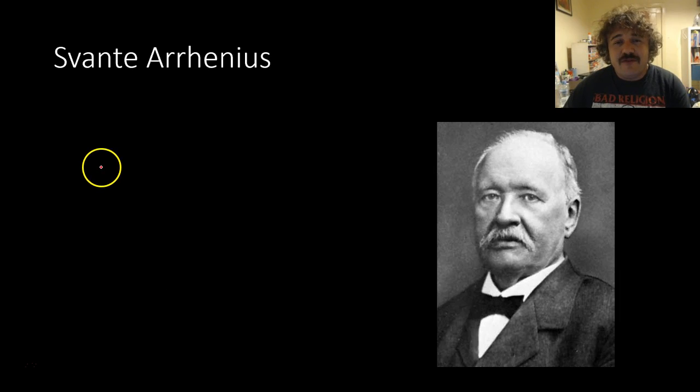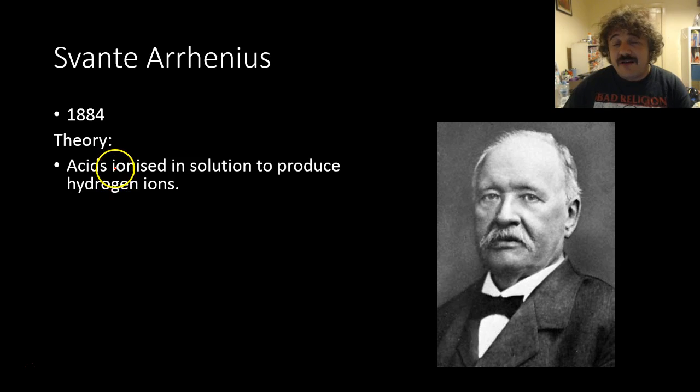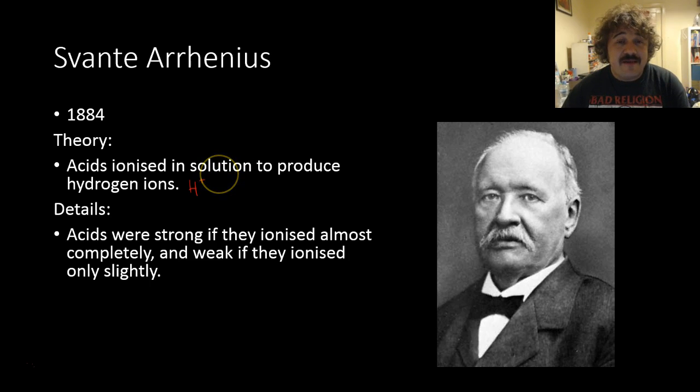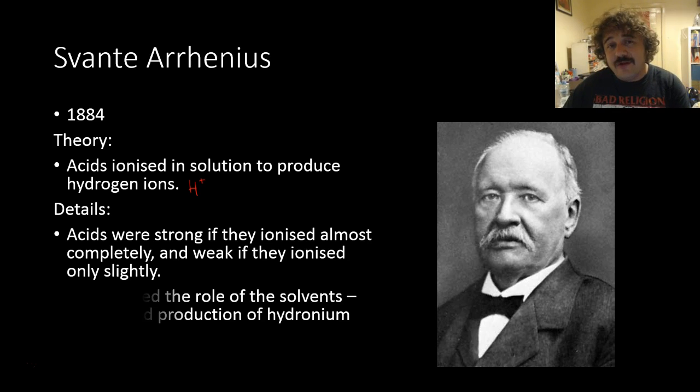And then we move to Svante Arrhenius who in 1884 came up with an idea that's very similar to the one we use now. And that is that acids ionize in solution to produce hydrogen ions or a proton. Now this is very similar to where we're at now. Now basically he also said that if an acid is strong it will ionize almost completely. And if it's weak it will only ionize a little bit.